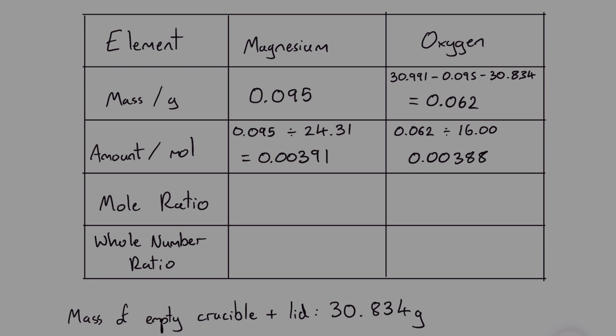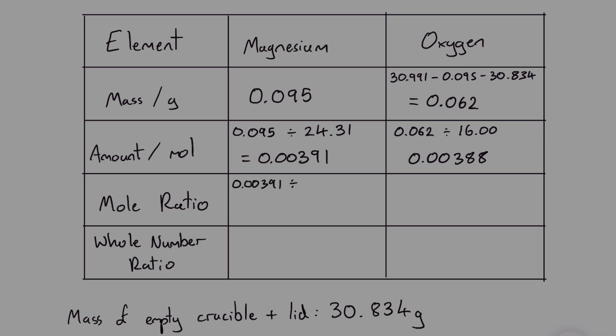Now we find the simplest whole number ratio between the two. To do that we divide both values by the smaller number of moles 0.00388. For oxygen we get a ratio of exactly one. For magnesium we get a ratio of 1.01 which we can round to one for a whole number ratio.